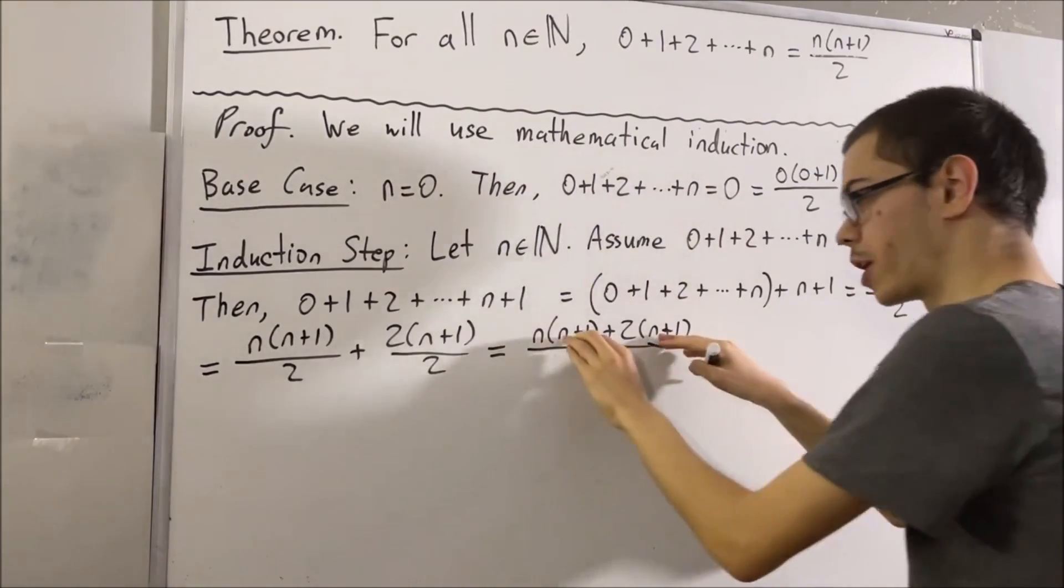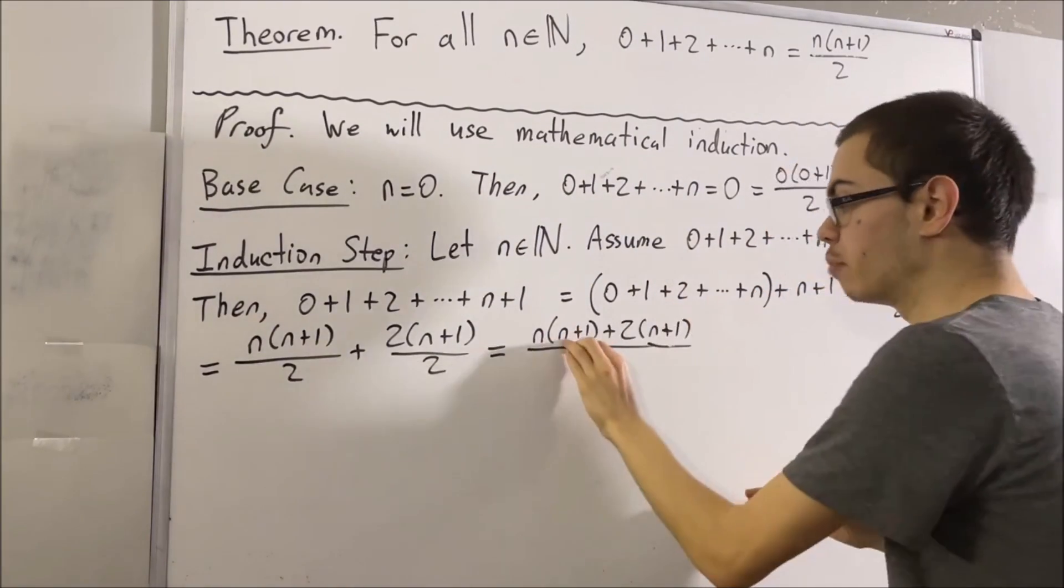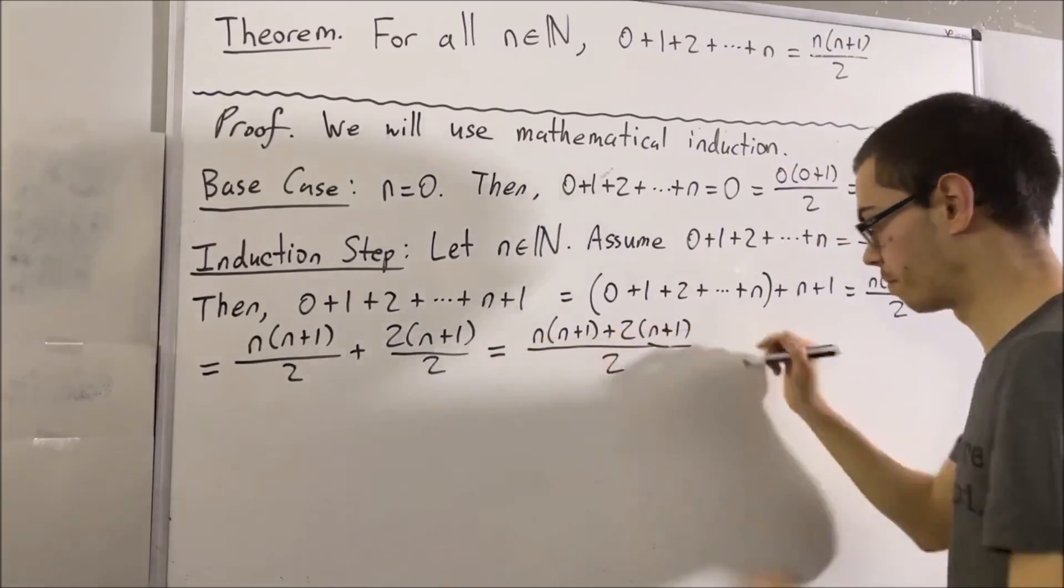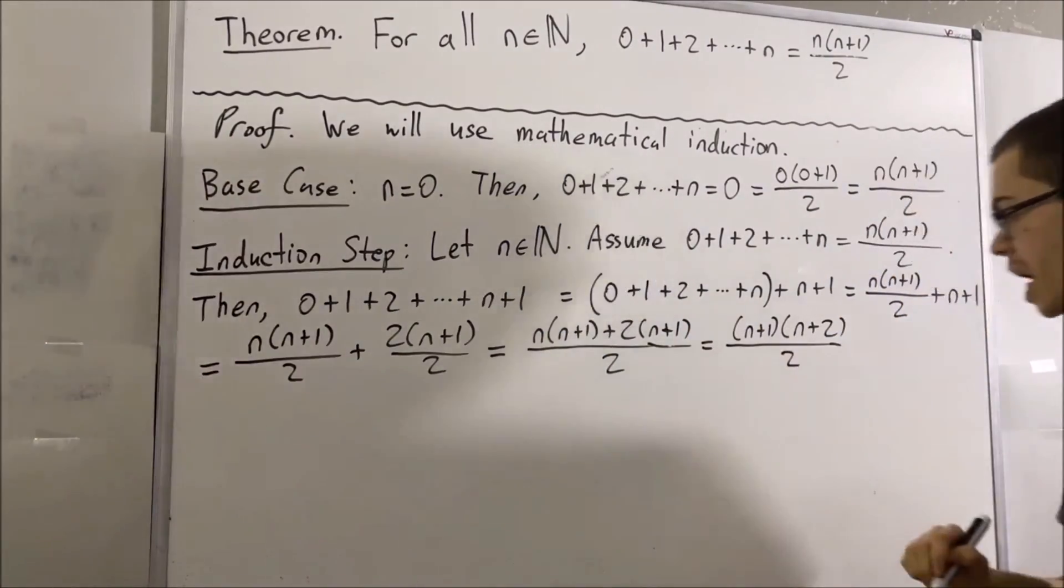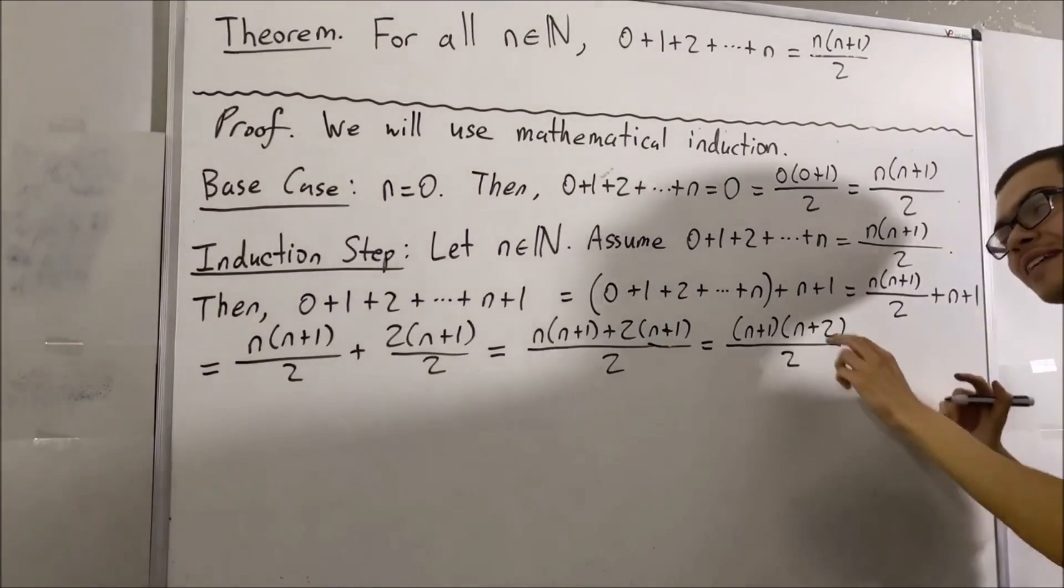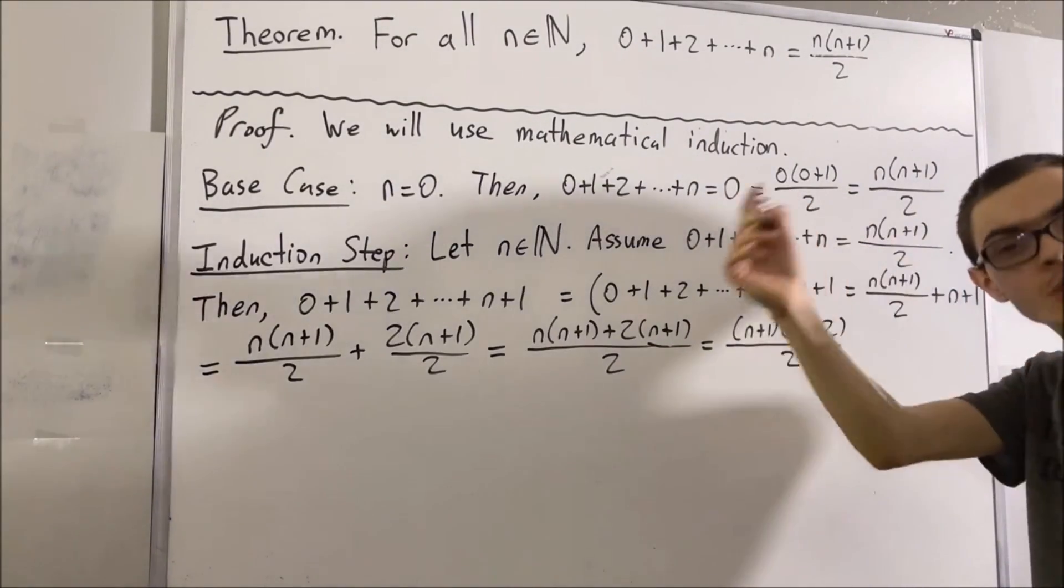Now, notice in the numerator, we can factor out n plus 1, so that we get n plus 1 times n plus 2. Now, I really want to emphasize that n plus 2 is just n plus 1 plus 1.